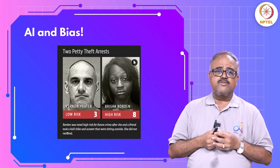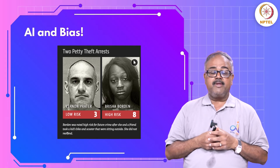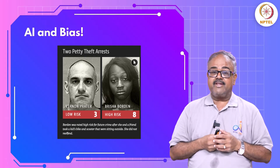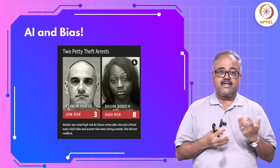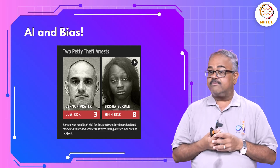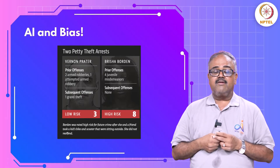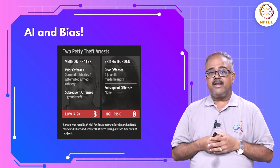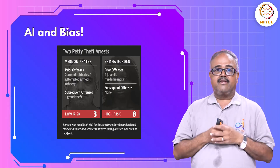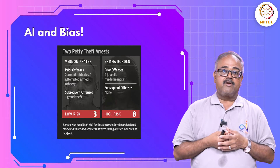Here's an example to dive deep into the bias case. There was an AI system used to decide bail pleas, scoring people on whether they have a low or high risk of committing a crime when released. It looked at one person on the left and said he has a low risk of committing a crime, and the person on the right had a high risk.